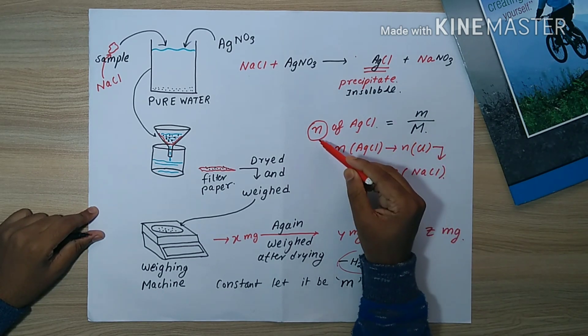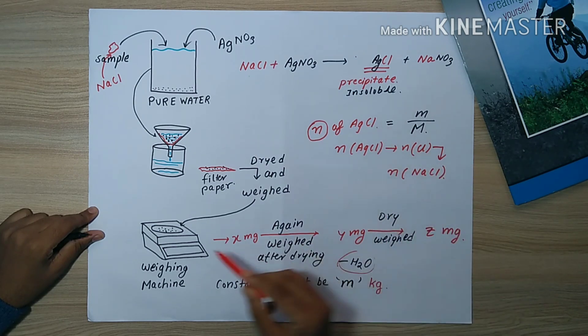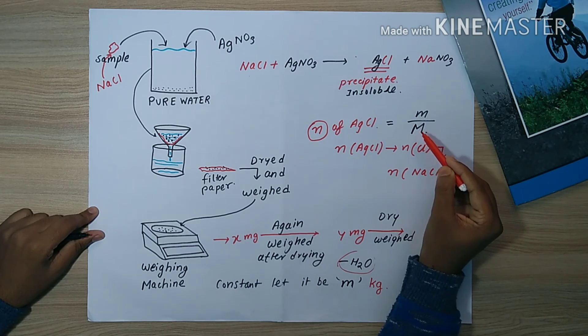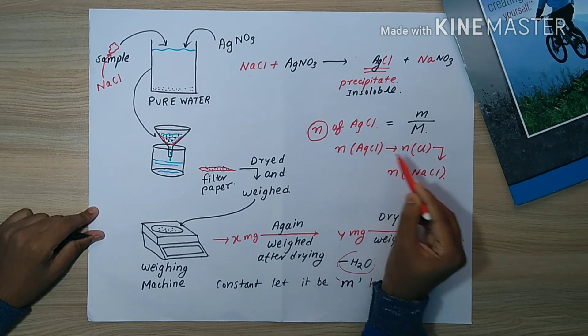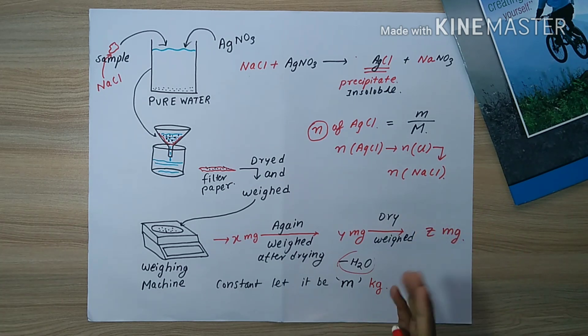When it attained a constant weight of M milligrams, we calculated the number of moles of AgCl by the formula m by capital M. From there we get the number of moles of NaCl. This is how we calculate the concentration of NaCl in our unknown sample.